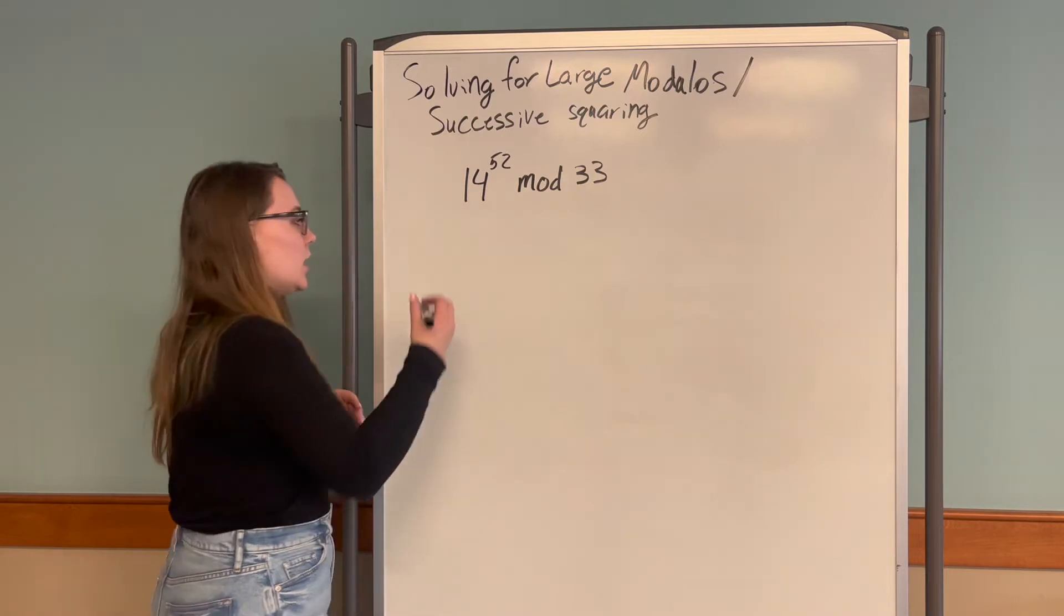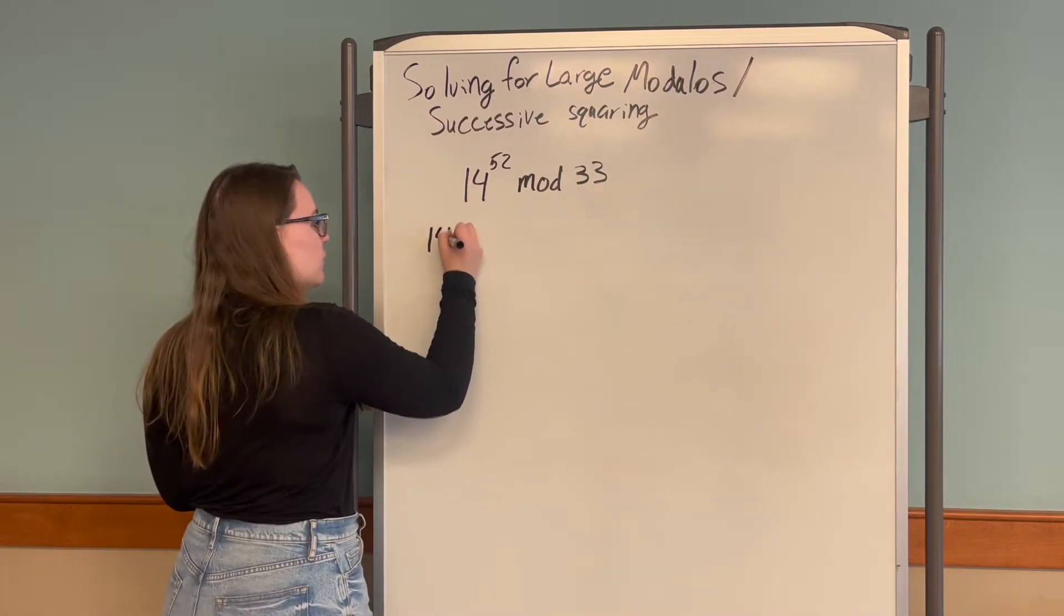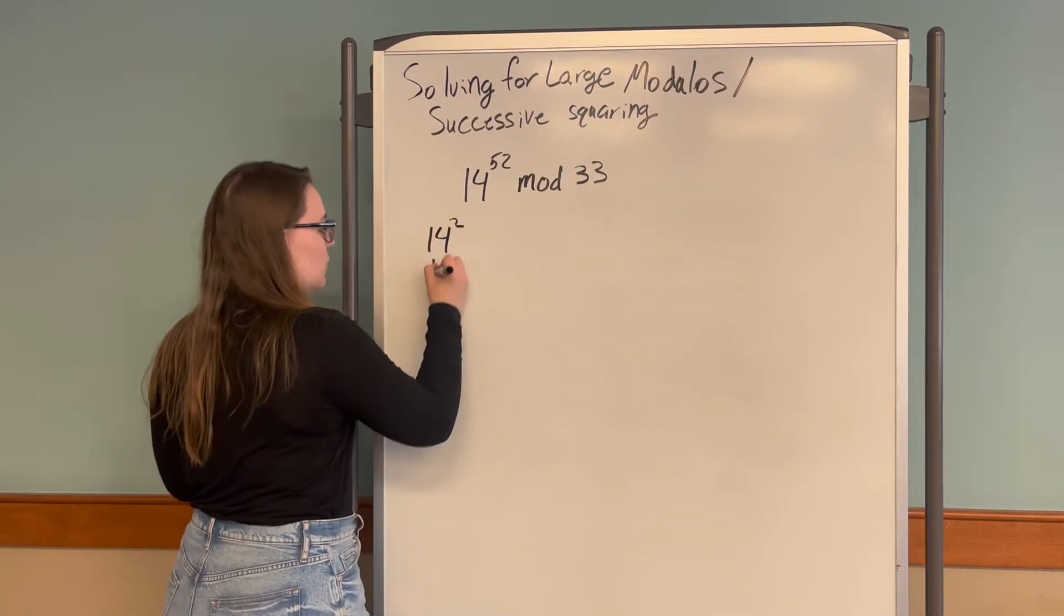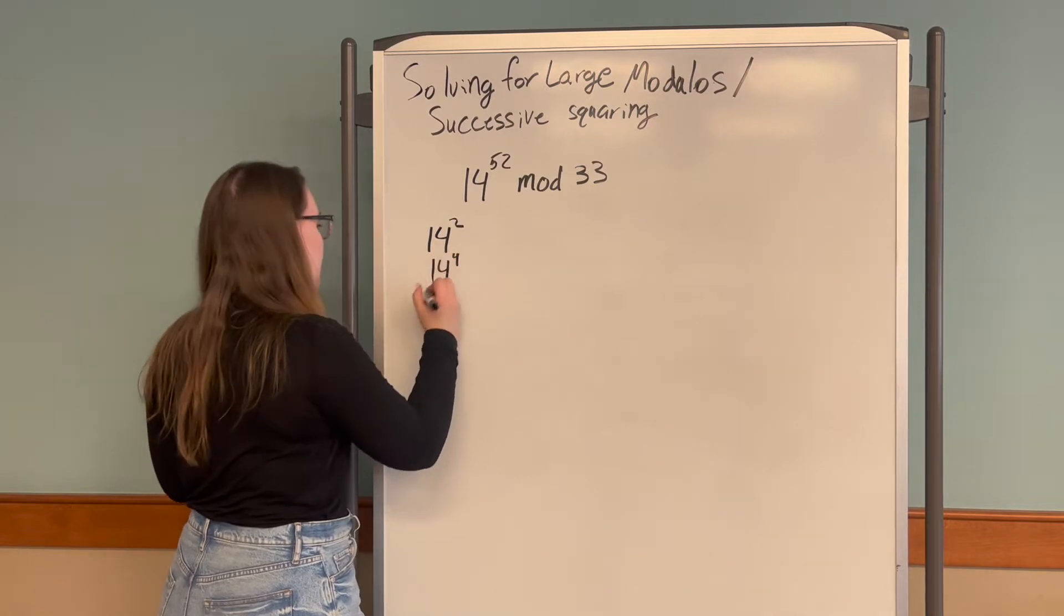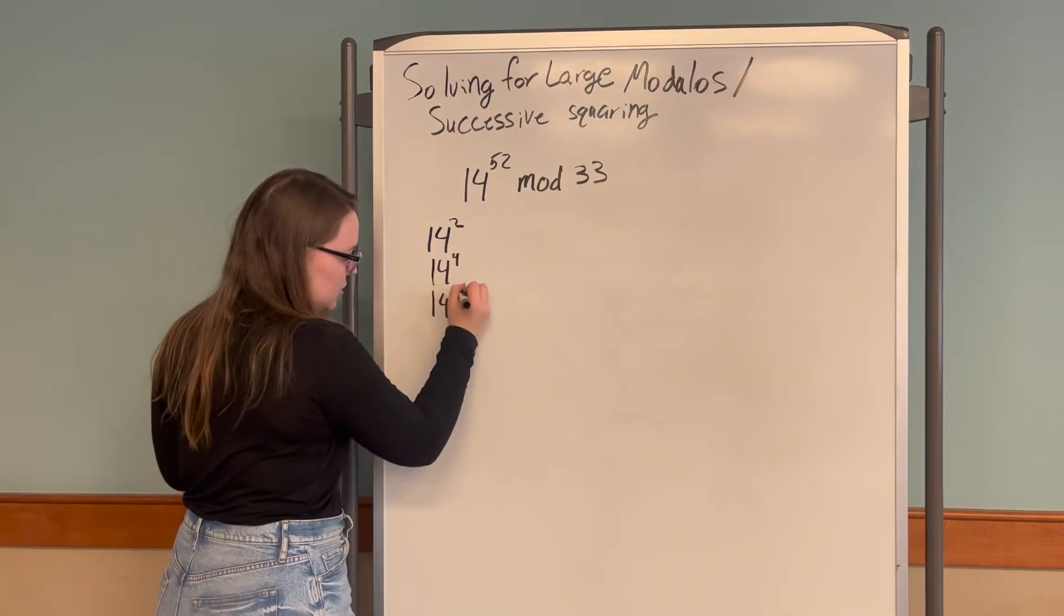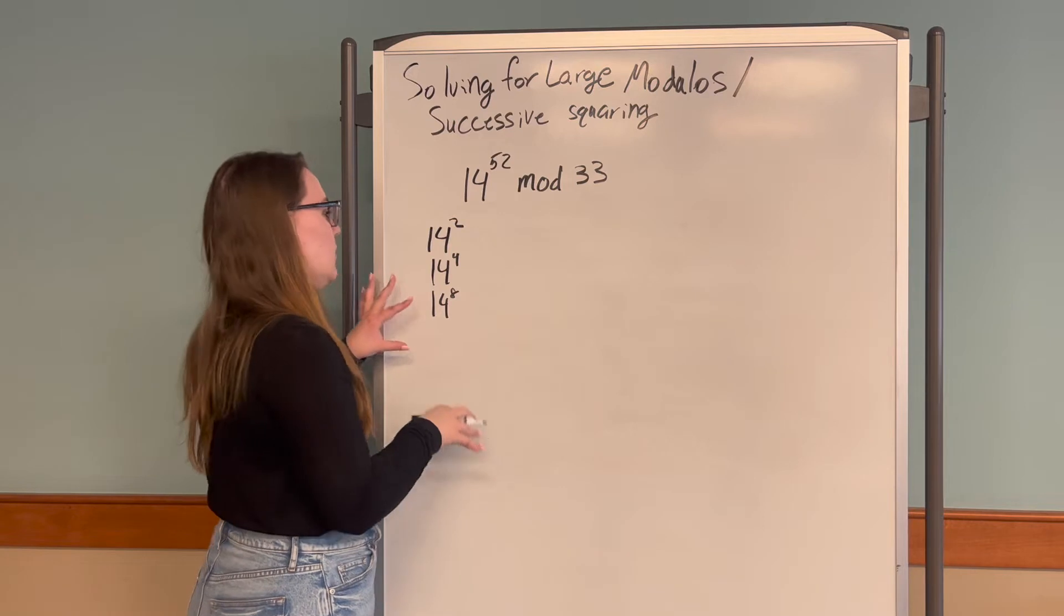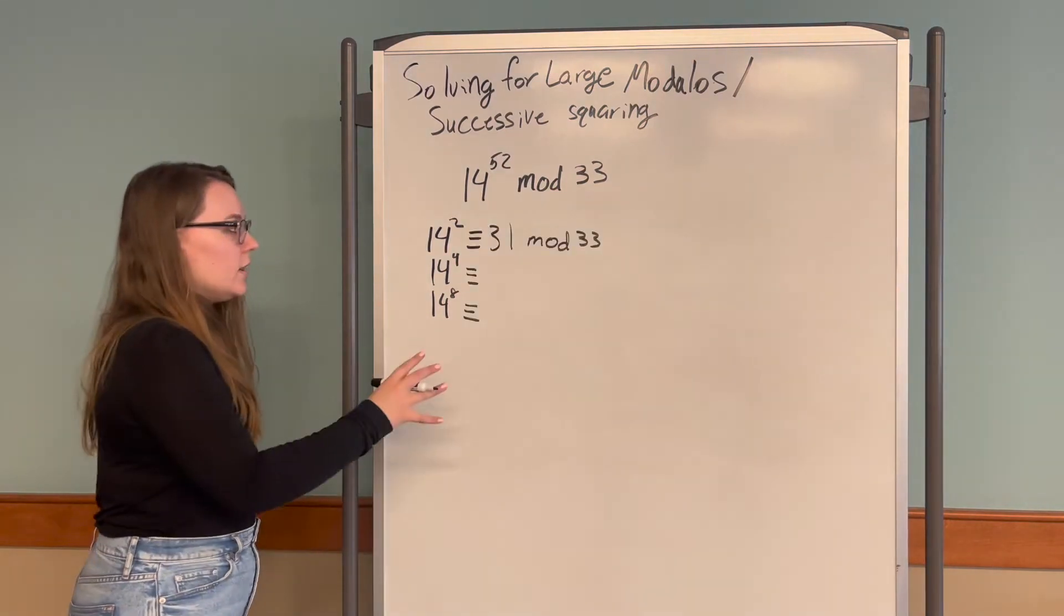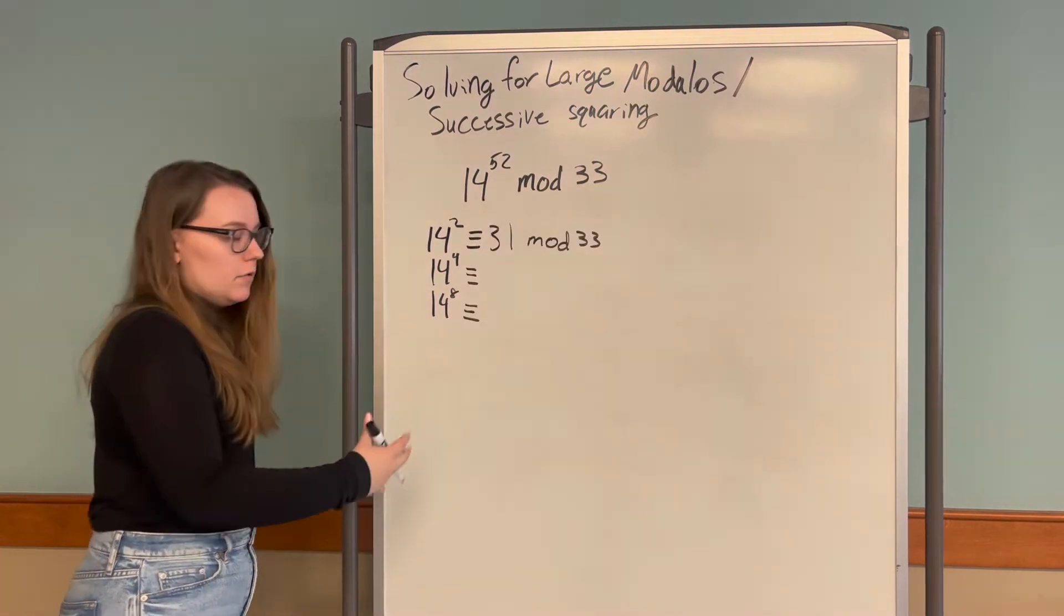For successive squaring, we're going to look at 14 to the power 2, 14 to the power 4, 14 to the power 8, and so on, and take those mod 33. I've already done all the math, so I'm just going to write all of them down.